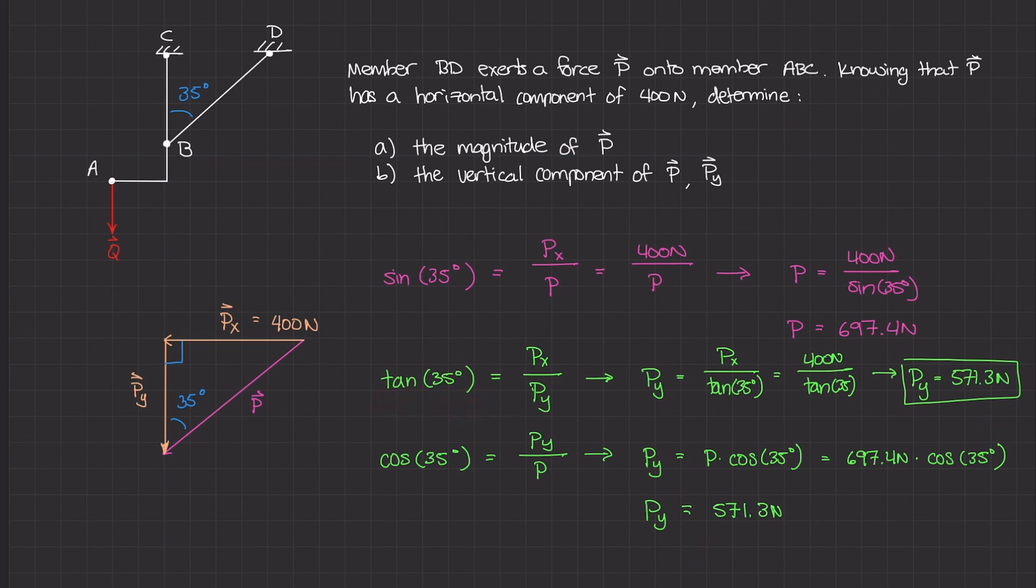All of these problems require you to dig into your geometry and trigonometry skills, draw the free body diagram appropriately, and use your trigonometric skills to figure out the components. The magnitude of P is 697.4 newtons and the vertical component P sub y has a value of 571.3 newtons.